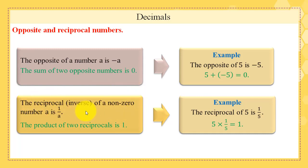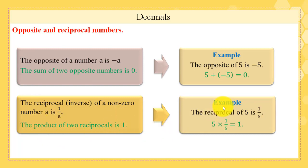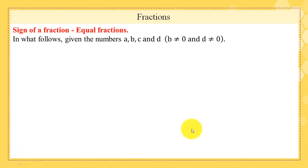Second, reciprocal numbers: the reciprocal or inverse of a non-zero number a is 1/a. The product of two reciprocal numbers is 1. As an example, the reciprocal of 5 is 1/5, since the product of 5 and 1/5 is 1. Now we will talk mainly about fractions: the sign of a fraction, equal fractions, and what follows.